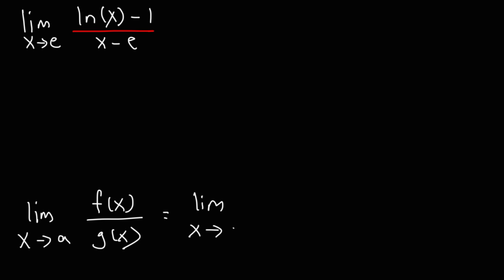So if we were to take the derivative of the top and the bottom, we would get the derivative of ln(x) is just 1 over x. The derivative of negative 1 is 0. The derivative of x is 1. The derivative of e is a constant, that's 0. So this becomes 1 over x.